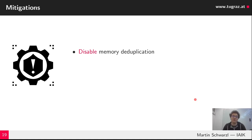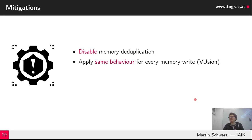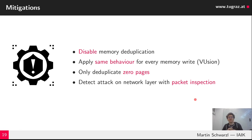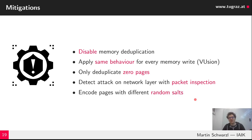How could we mitigate this problem? One solution is to disable memory deduplication entirely. Another, proposed by the University of Amsterdam, is called VUsion, which applies same-behavior fake merging of pages. There was also a proposal to only deduplicate zero pages. You could detect such attacks using packet inspection, since repeated attempts would resemble a large DDoS attack. Another variant is to encode pages with different random salts.